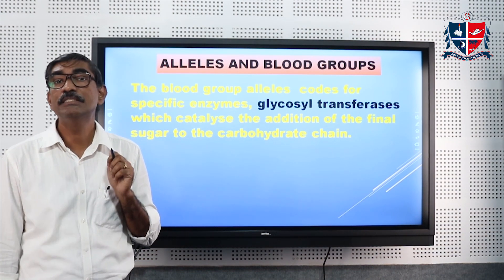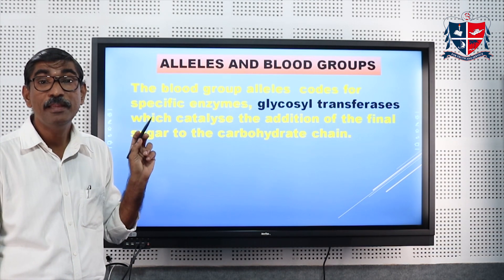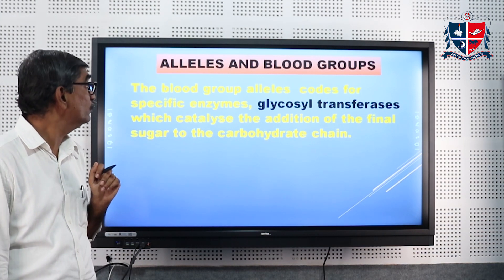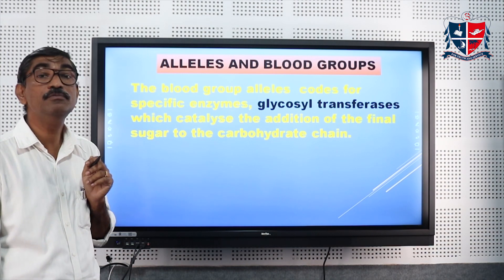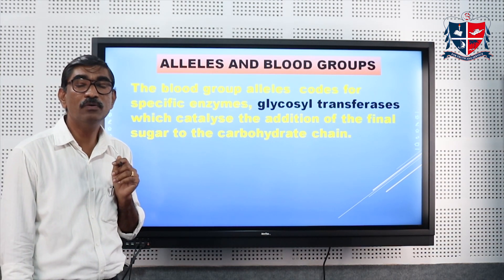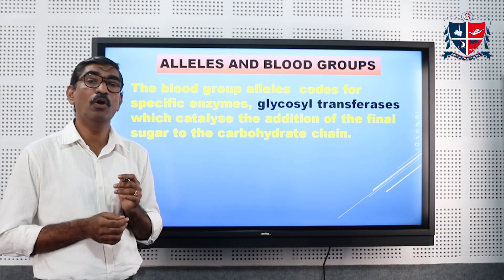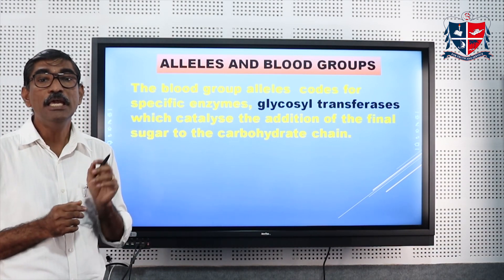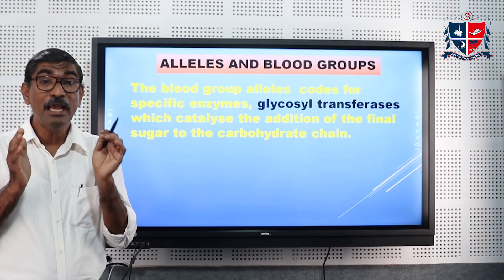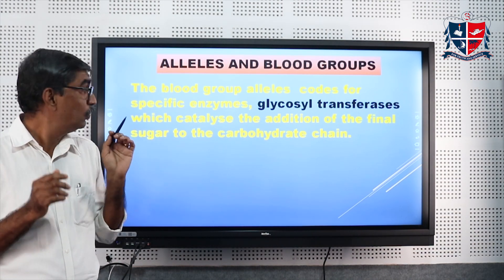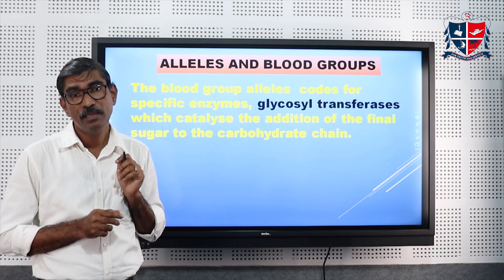Each allele produces an enzyme called glycosyl transferase. The function of this glycosyl transferase is to add a sugar molecule to the end of a carbohydrate chain, and this last sugar molecule determines the antigenic property — which antigen is present on the RBC. So indirectly, this enzyme determines the blood group of an individual.